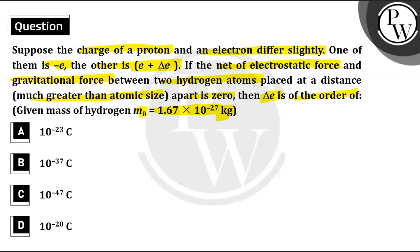So, it is assumed that the charge of proton and the charge of electron differ slightly by an amount equal to delta E. And so if we take the charge of electron as minus E, then the charge of proton will be E plus delta E.